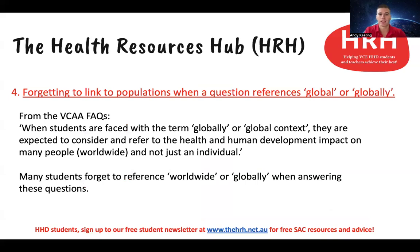Number four is forgetting to link populations to populations when a question references 'global' or 'globally.' In Unit 4, we're often looking beyond the individual to how something might have an impact on global health or global human development. The VCAA has released a Frequently Asked Questions document which outlines that when students are faced with the term 'globally' or 'global context,' they're expected to consider and refer to the health and human development impact on many people worldwide, not just an individual. So when answering a question that refers to health and wellbeing globally, you need to reference 'worldwide' or 'globally' to show your answer is looking beyond the individual and relating to the impact on populations across the world.